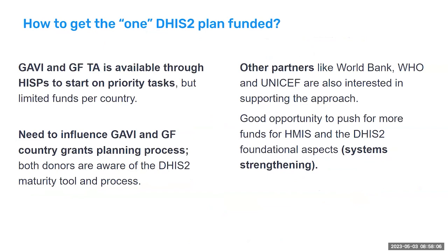For countries more reliant on external funding, UIO and the HISP network have some technical assistance funding available through GAVI and Global Fund. But most of the money comes through country technical assistance grants, and showing that you're planning holistically is also a way to influence that grantmaking process.